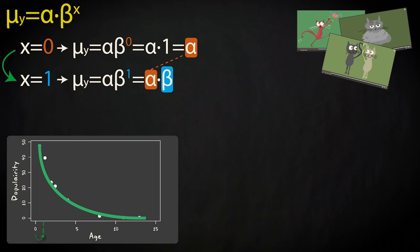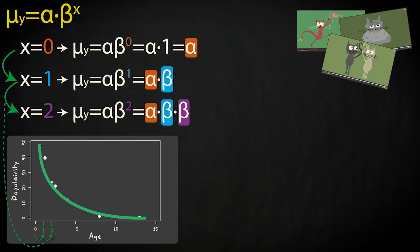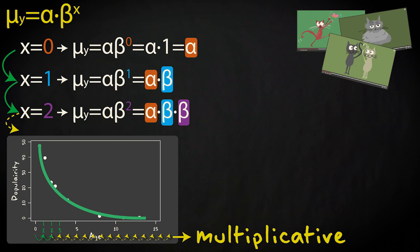If we move up another unit in x from one to two, the predicted value changes from α times β to α times β times β. So the predicted value at x equals two is the previous value at x equals one times β. The same holds if we move from x equals two to x equals three. This is why we call the exponential model a multiplicative model, because for each increase in x, the predicted value increases at the percentage rate set by β.